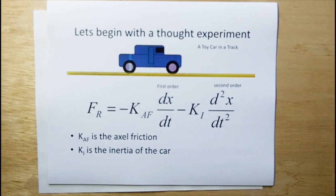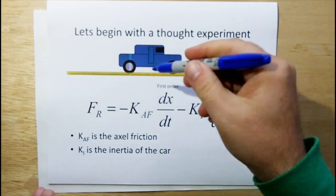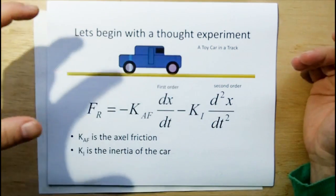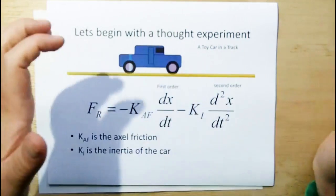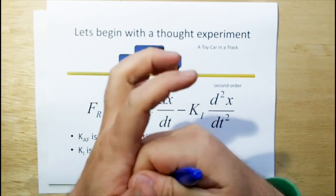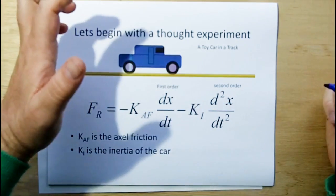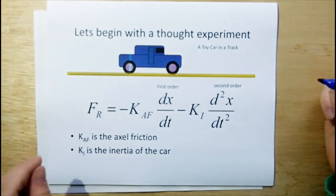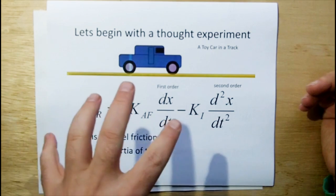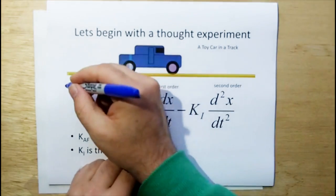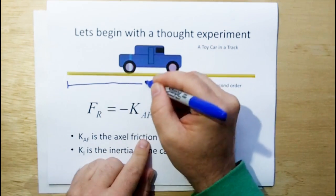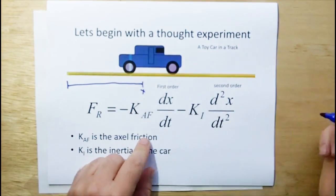Let's begin with a simple thought experiment. What you see here is a toy car — like a Pinewood Derby kind of car that's in a track. A child is going to play with this car by pushing on it, and the force that's going to oppose the child pushing it — the force felt by the child as he tries to push the car, the reaction force — is going to be some function of the velocity and the acceleration. The car is at position x from the beginning of the track.